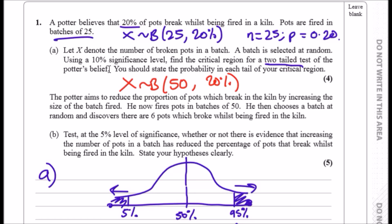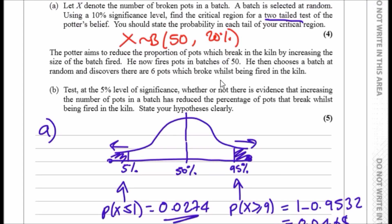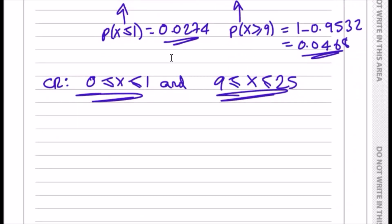It's not going to be 6 out of 50 for p, because this is how much he actually discovers. This is not a rate; this is what he discovers, which is something different. That's going to be the probability of finding if this falls in line. Test at the 5% level of significance whether or not there is evidence that increasing the number of pots in a batch has reduced the percentage of pots that break. Just to recap, 6 over 50 is 12%, so technically it's under 20%. We need to check if this statement is actually true.